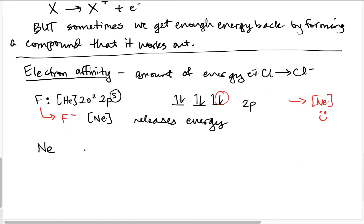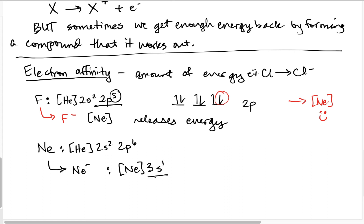But neon already has a full 2p6 — its configuration is 2s2 2p6. If we wanted to add an electron to make neon-minus, we would have to add another orbital to put the electron in, and this costs a lot of energy. The 3s orbital is quite a bit higher in energy compared to the 2p shell, which is also why sodium is so much larger than neon — the electron goes much farther out from the nucleus.